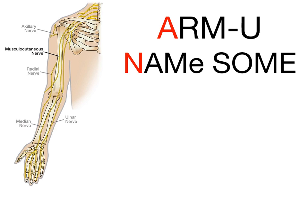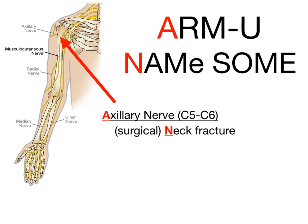Let's start with the axillary nerve. The A in 'Arm U' and the N in 'name some' go together — we're talking about an axillary nerve injury. The axillary nerve arises from the C5–C6 distribution and will get damaged if you have a surgical neck fracture. So A stands for axillary nerve and N stands for the surgical neck fracture. If you have a surgical neck fracture of the humerus, it will damage the axillary nerve.